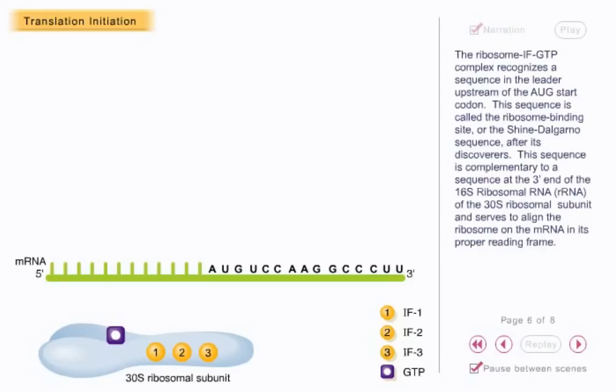The ribosome IF-GTP complex recognizes a sequence in the leader upstream of the AUG start codon. This sequence is called the ribosome binding site, or the Shine-Dalgarno sequence, after its discoverers.